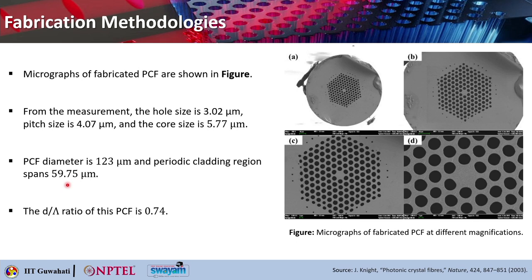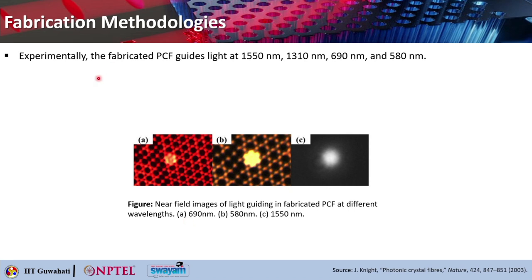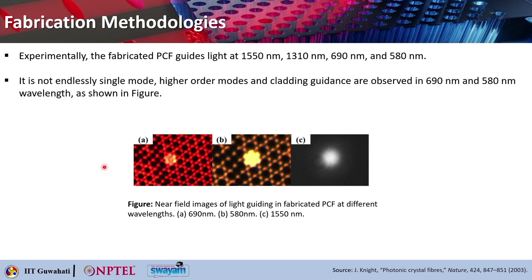The d/lambda ratio for this fabricated fiber was 0.74. Experimentally, the fabricated PCFs guide light at 1550 nm. Light guiding was also observed at 690 nm and 580 nm, though at those wavelengths it was not endlessly single mode — some higher-order modes were also observed — and cladding guidance was also seen in those cases.